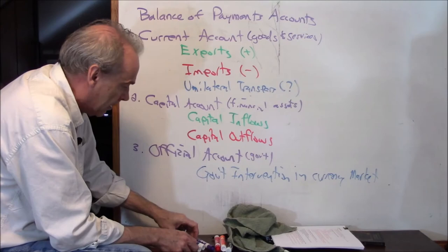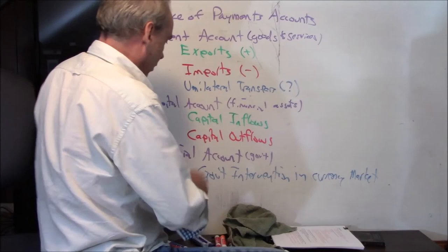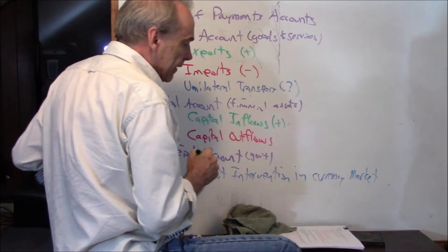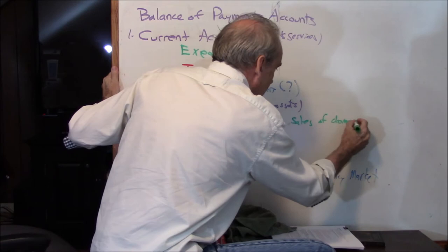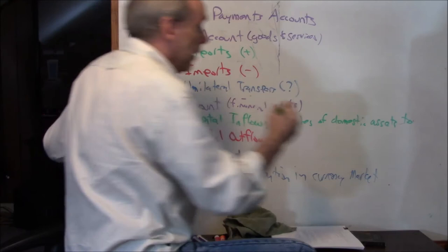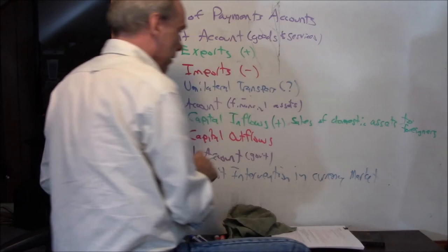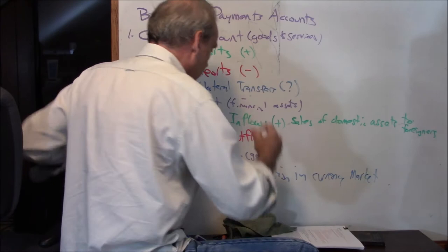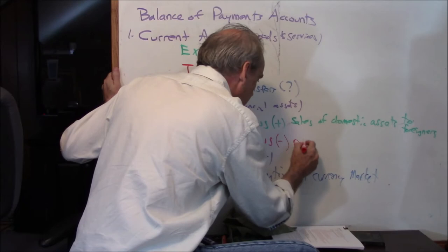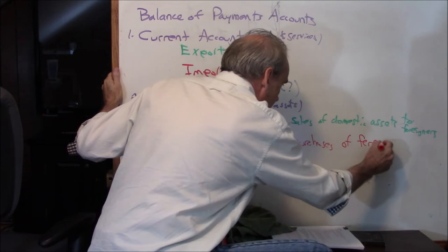Now I need to write the capital account definitions. Capital inflow is a plus sign — it's the sale of domestic assets to foreigners. Capital outflow is a minus sign — those are purchases of foreign assets. My West Virginia relatives would say 'fern assets.'